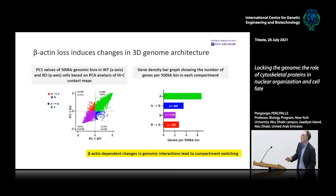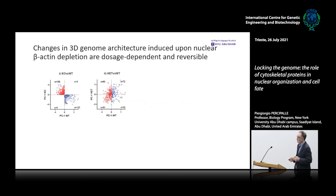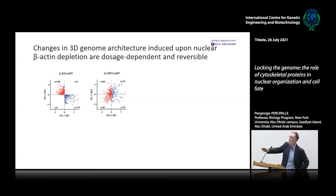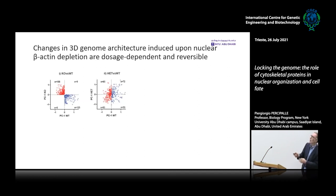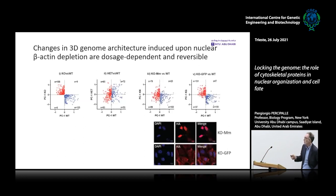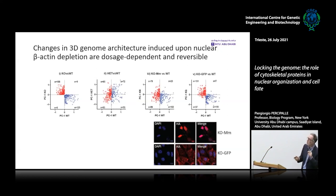Beta-actin-dependent changes in genomic interactions lead to compartment switching. The extent of switching is considerably less in the heterozygous condition, in line with the dosage effect. Remarkably, if you reintroduce mouse NLS-tagged actin in the nucleus in the knockout background, you actually rescue the degree of switching — the switching is reversible. Cells expressing GFP instead do not show this rescue. So nuclear beta-actin has an effect at the compartment level of genomic architecture.